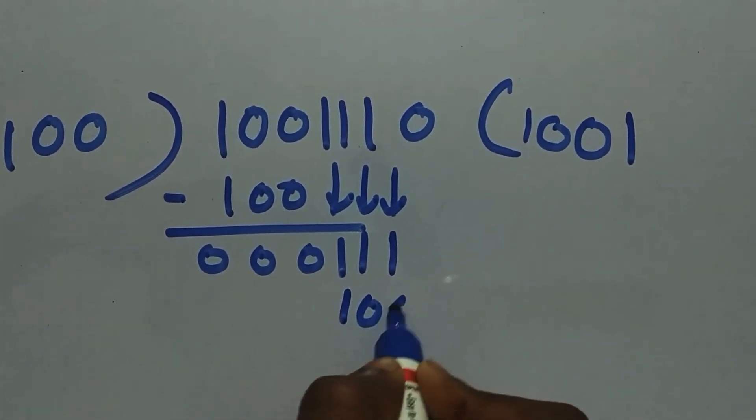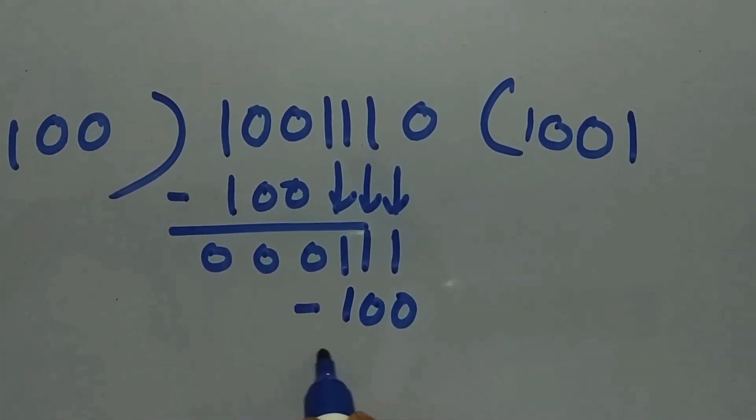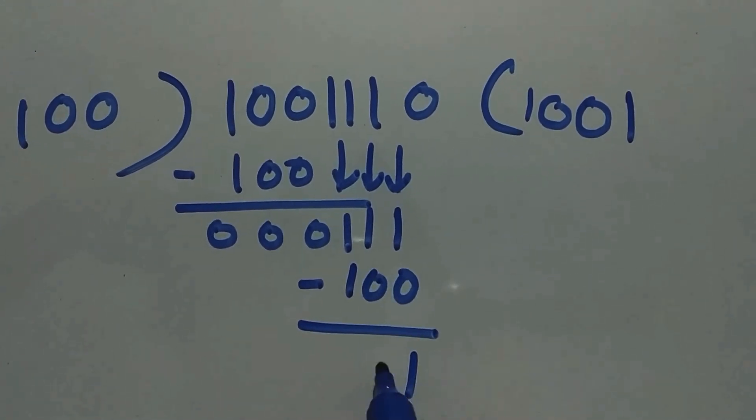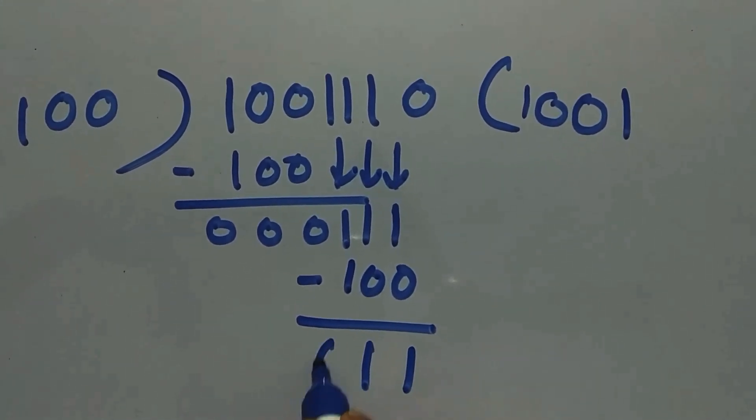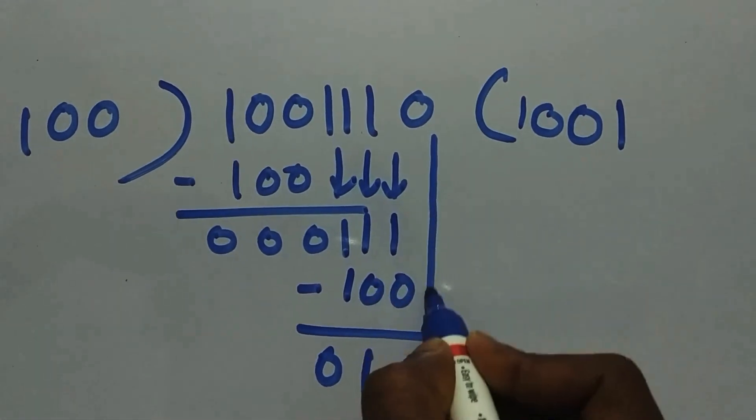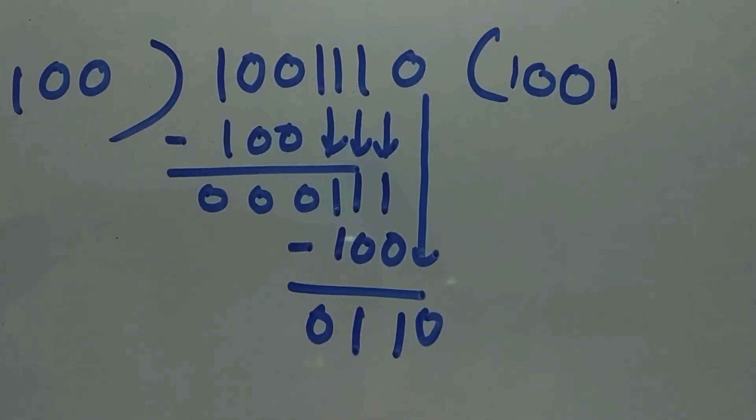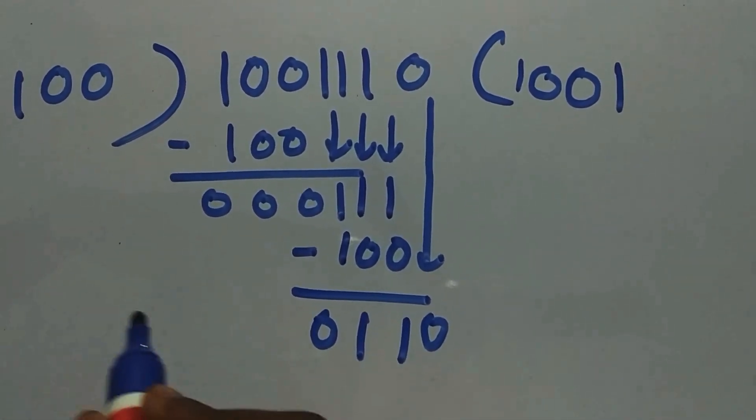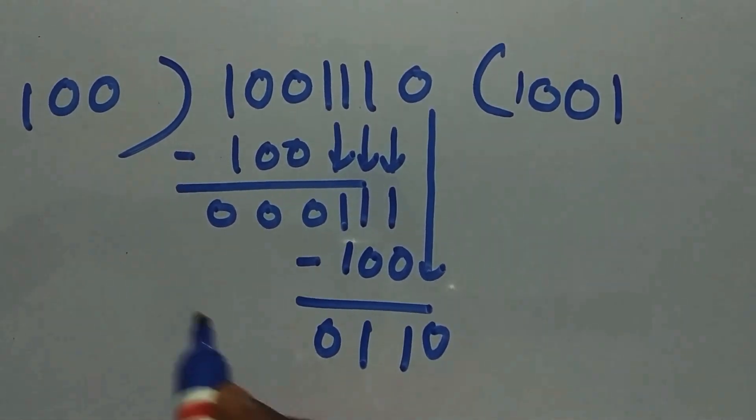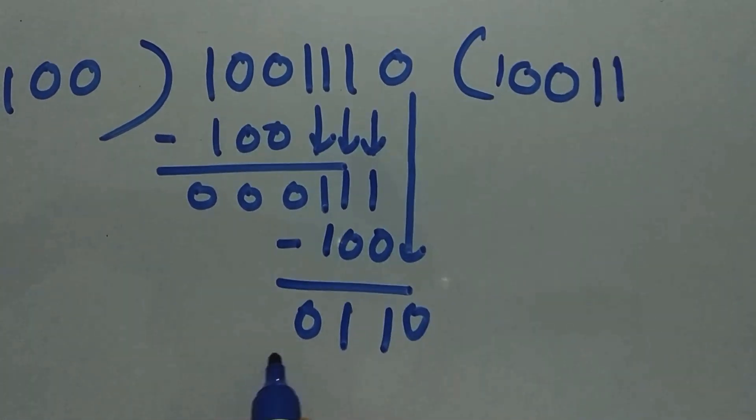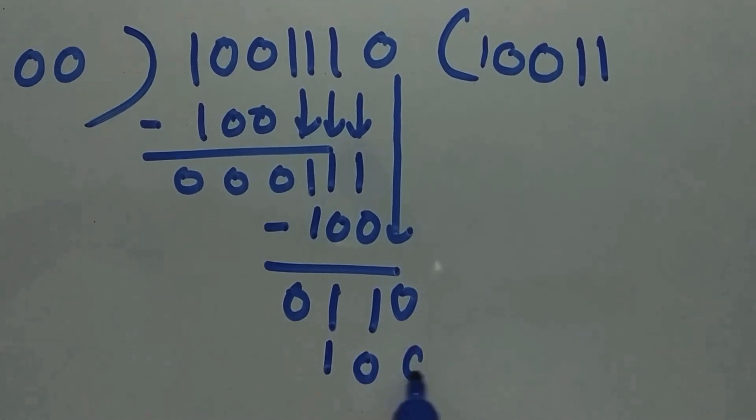So now it is 100. Now subtract the value. You get 110. Now bring the last 0. You got the last 0, and now we need to divide it by 100. Multiply it by 1, you get 100.